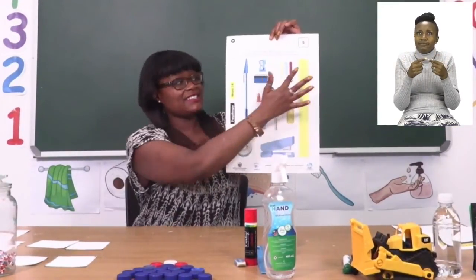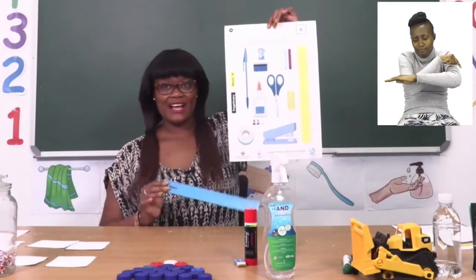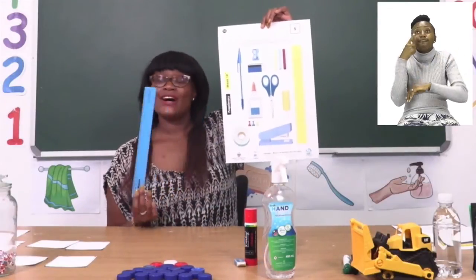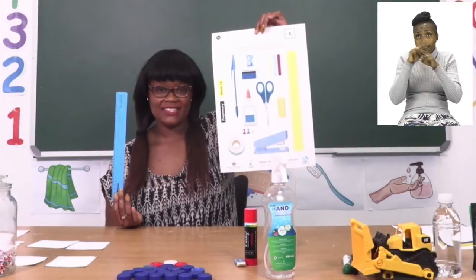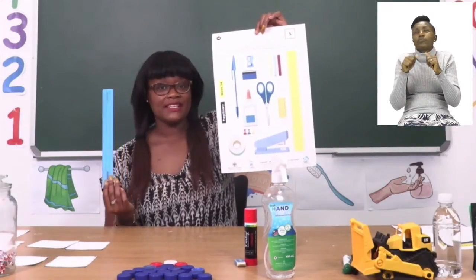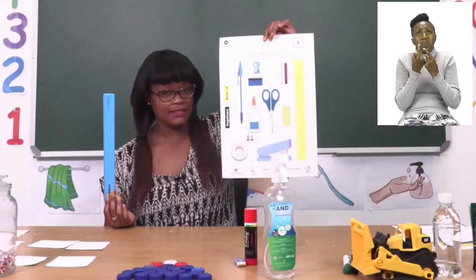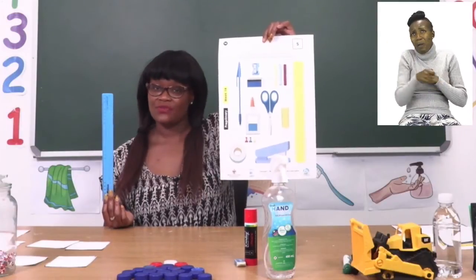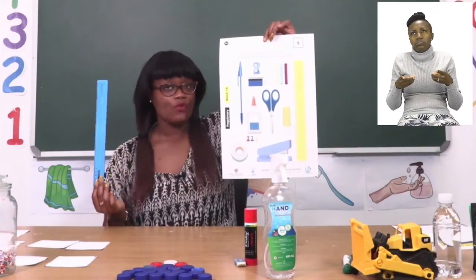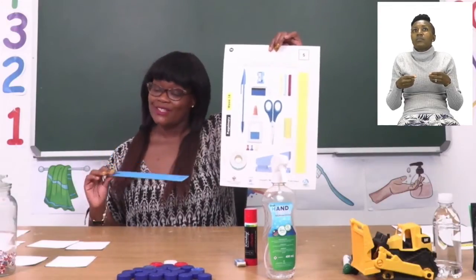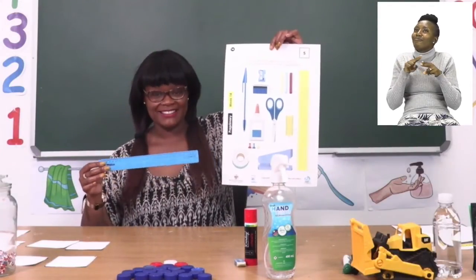The first thing you can see is a ruler. Now a ruler when used correctly is not dangerous. But if you decide to play with it by smacking someone, then that is very, very dangerous. So for now we're going to say a ruler is not dangerous because we use it to make lines.